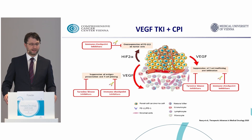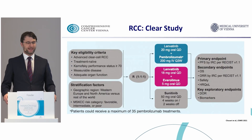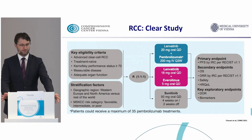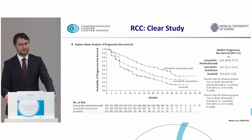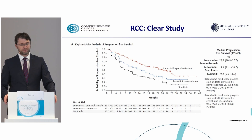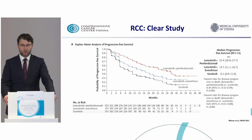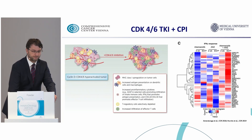Think also of renal cell carcinoma, where VEGF plays an important role. VEGF itself causes an immunosuppressive state, so it's quite reasonable to combine VEGF tyrosine kinase inhibitors with immunotherapy. This has been shown very nicely in renal cell cancer — one of the most active combinations is pembrolizumab plus lenvatinib, investigated in the CLEAR study. The primary endpoint was progression-free survival, where lenvatinib plus pembrolizumab was superior to sunitinib alone, with an overall survival benefit as well.